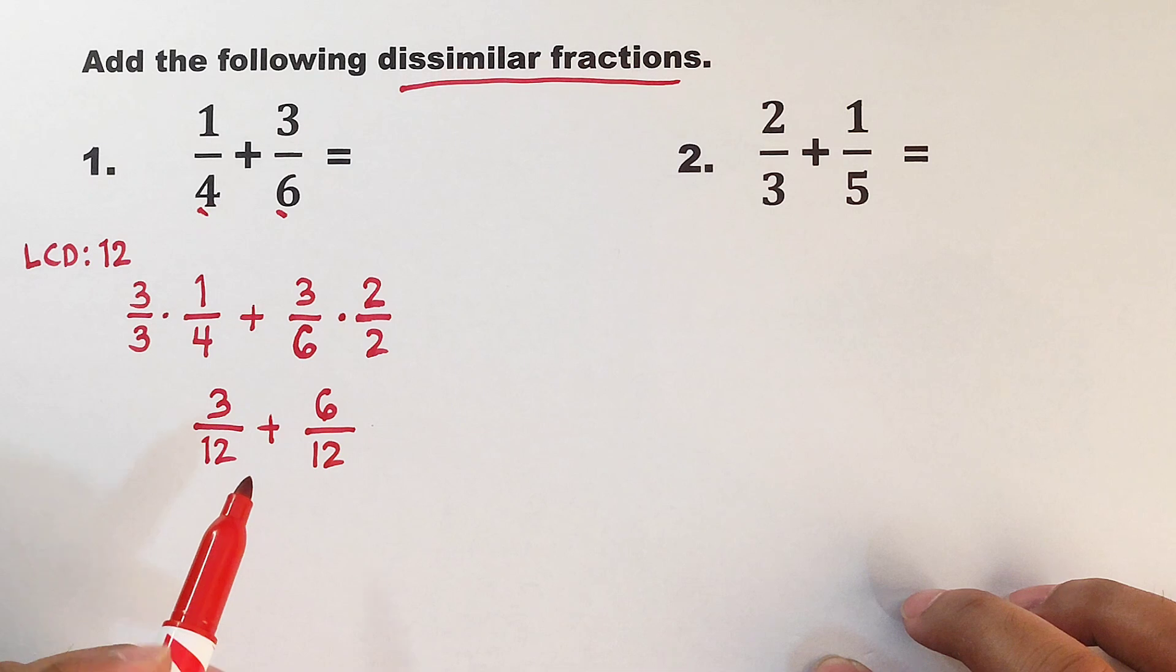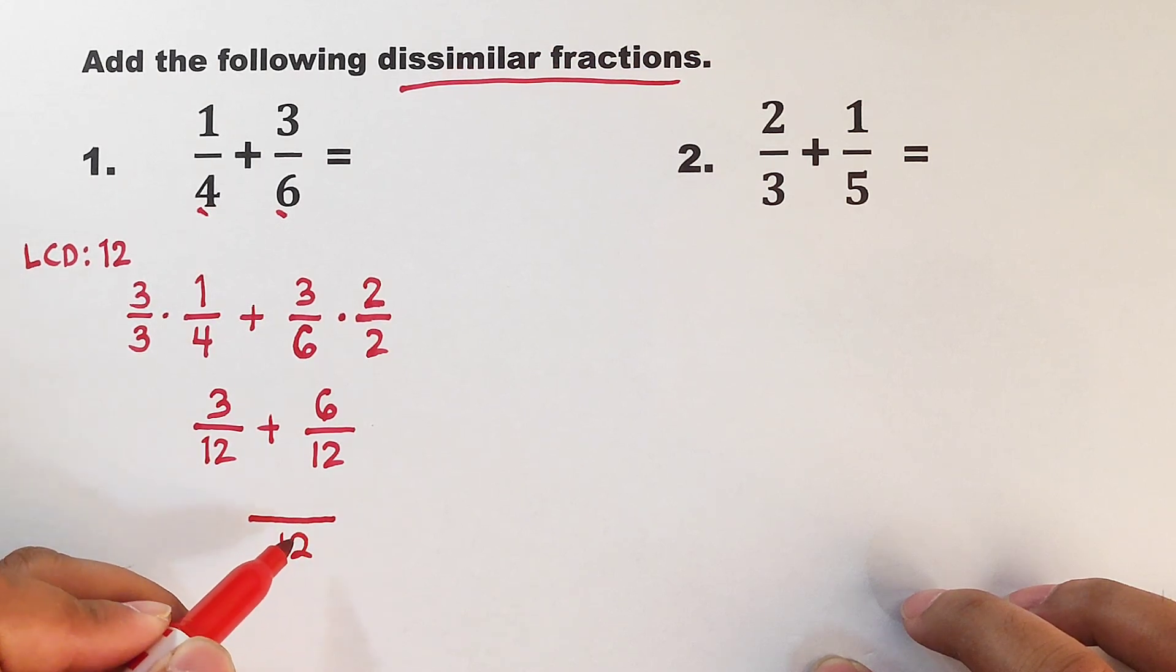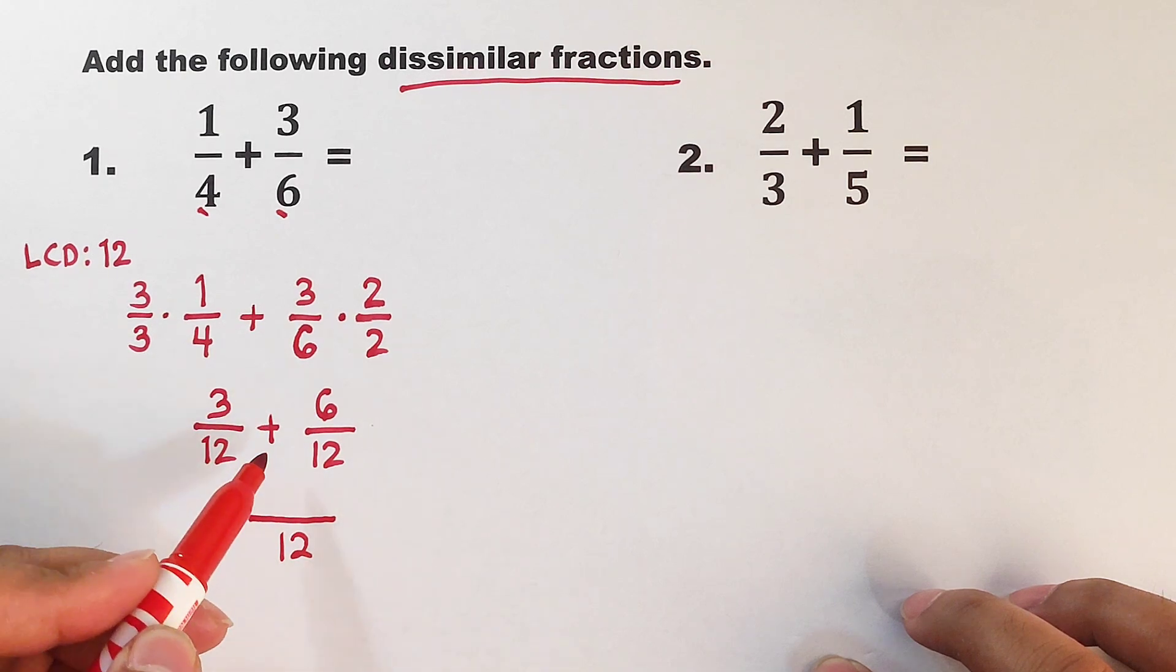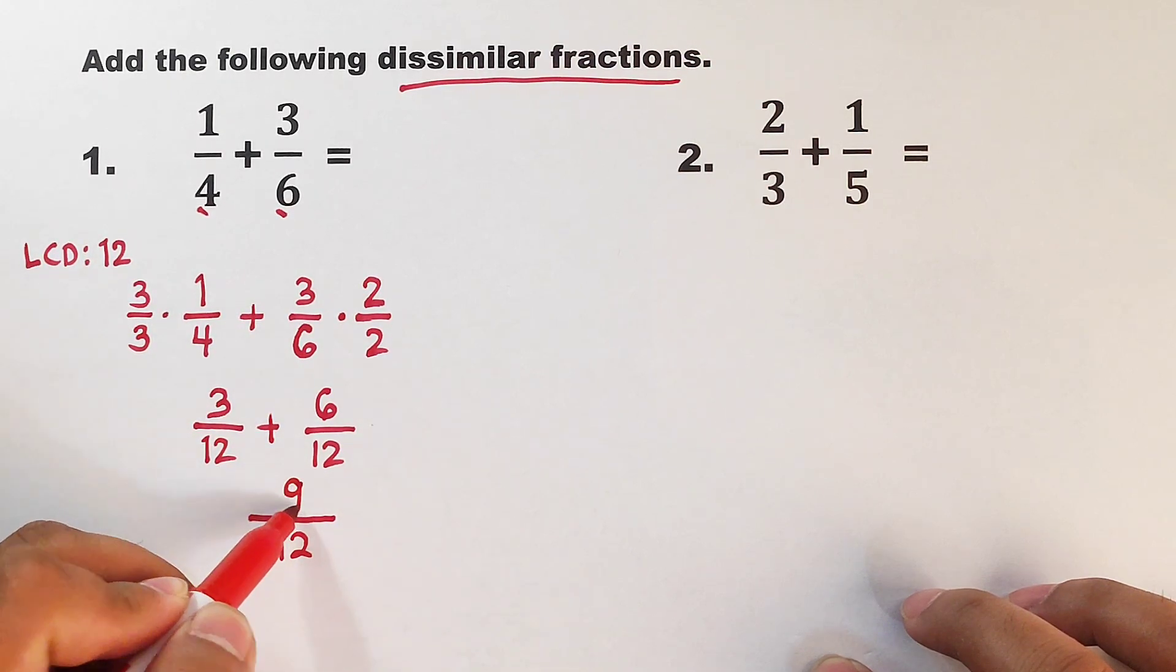And as you can see right now, we have the same denominators. So in that case, we can simply copy the denominator, which is 12. And then add the numerators, 3 plus 6, that would be 9.